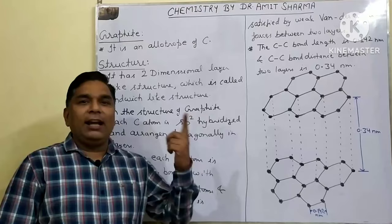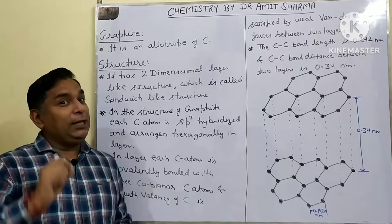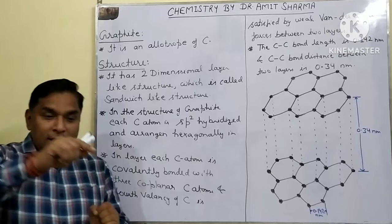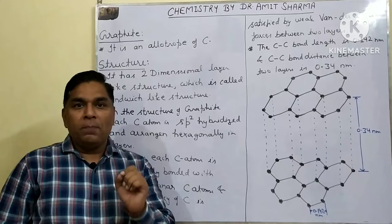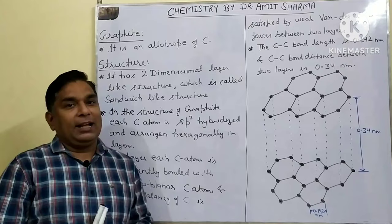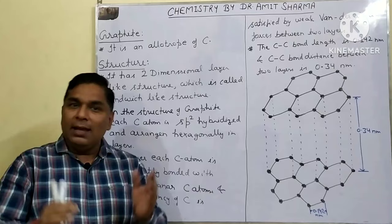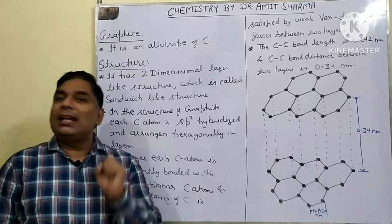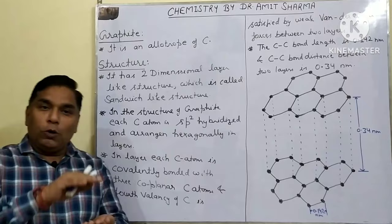In the structure of graphite, each carbon atom is sp2 hybridized and arranged hexagonally in layers. Within each layer, each carbon atom is covalently bonded with three coplanar carbon atoms. The valency of carbon is 4, and the fourth valency is satisfied between two layers by weak van der Waals force.